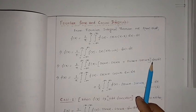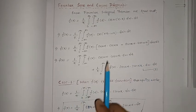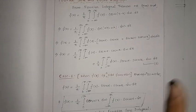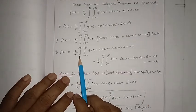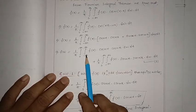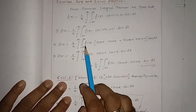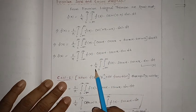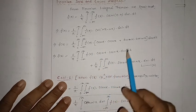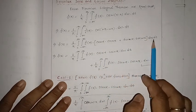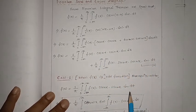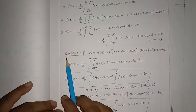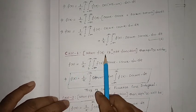We segregate this into two terms: one by pi double integral of f(t) cos(ωt)cos(ωx) dω dt, plus one by pi double integral of f(t) sin(ωt)sin(ωx) dω dt. Let this be equation number one. Now consider Case 1 when f(t) is an odd function.